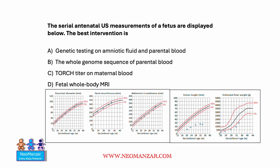Let's walk through one by one. Before we start, let's look at the differences. For example, let's start with biparietal diameter. As you can see, the growth is following the curve, so that looks good. Same thing with head circumference — that looks okay.